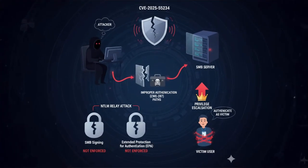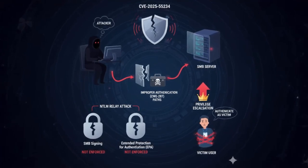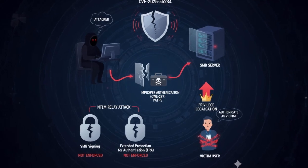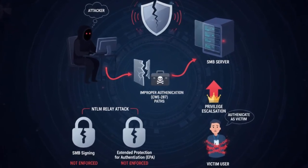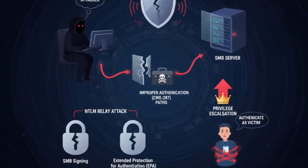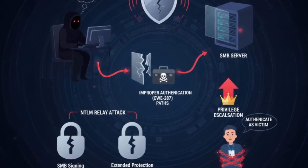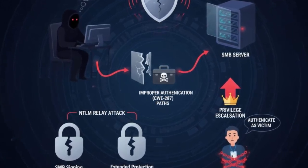The vulnerability is an elevation of privilege via an unauthorized access vector through authentication relay. In plain terms, an attacker who can coerce or capture a Windows user's NTLM authentication using Responder can forward that to an SMB server that doesn't require signing or EPA, and then act as that user on the server.